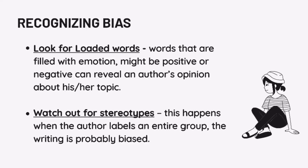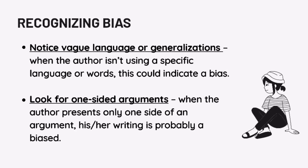Let's discuss recognizing bias. First, look for loaded words — words that are filled with emotion, either positive or negative, which can reveal an author's opinion about his or her topic. Second, watch out for stereotypes. This happens when the author labels an entire group; the writing is probably biased. Third, notice vague language or generalization — when the author isn't using specific language or words, this could indicate a bias. Fourth, look for one-sided arguments. When the author presents only one side of an argument, his or her writing is probably biased.